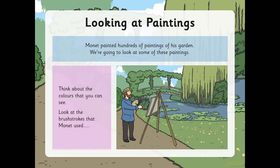He painted hundreds of paintings of his garden. We're going to look at some of these paintings, and as we do I'd like you to think about the colours that you can see and look at the brush strokes that Monet has used to create different effects.